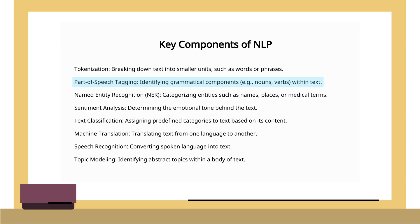Part of speech tagging identifies grammatical components, such as nouns and verbs within the text. Named Entity Recognition, or NER, categorizes entities in text, identifying names, places, or medical terms.